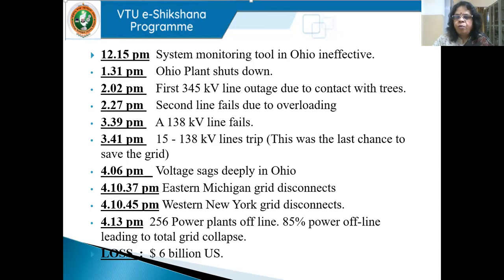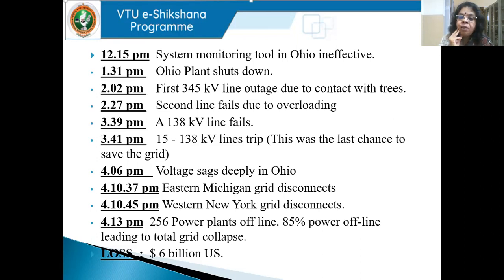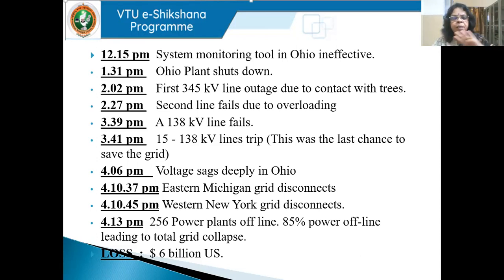About one hour and fifteen minutes later, at 1:31, the Ohio plant shut down. Then after another half hour, a 345 kV line got outaged — the line was opened due to contact with trees. This is very common with overhead lines, because trees have sap and are conducting bodies. During monsoon season, for example in Karnataka, trees are pruned to prevent inadvertent short circuits when it rains.